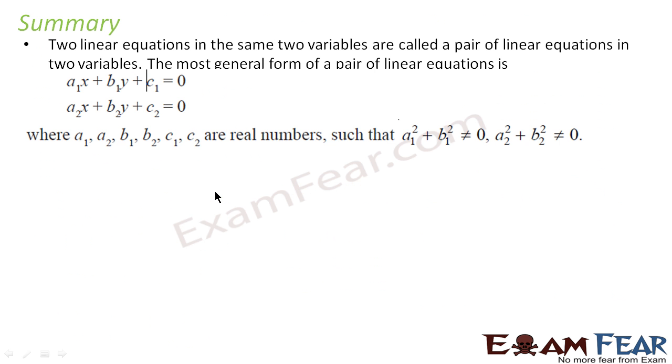Let us do a quick summary. Two linear equations in the same two variables are called a pair of linear equations. The variables are the same x and y, and they are called a pair because this is one linear equation, this is one linear equation, and the total is called a pair of linear equations. Where a1, a2, b1, b2, c1, c2 are real numbers, and a1 squared plus b1 squared is not equal to 0, and a2 squared plus b2 squared is not equal to 0. That means at a given point of time, both a1 and b1, or both a2 and b2, cannot be equal to 0.